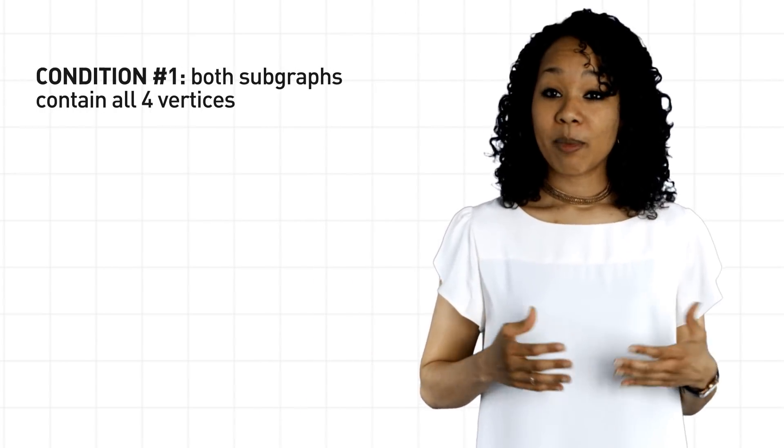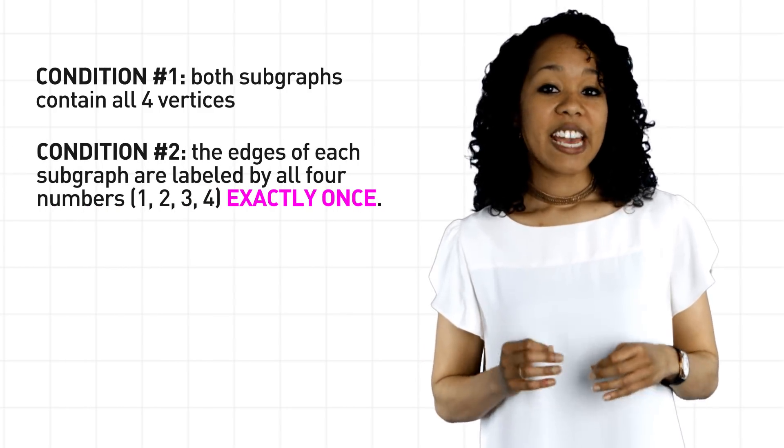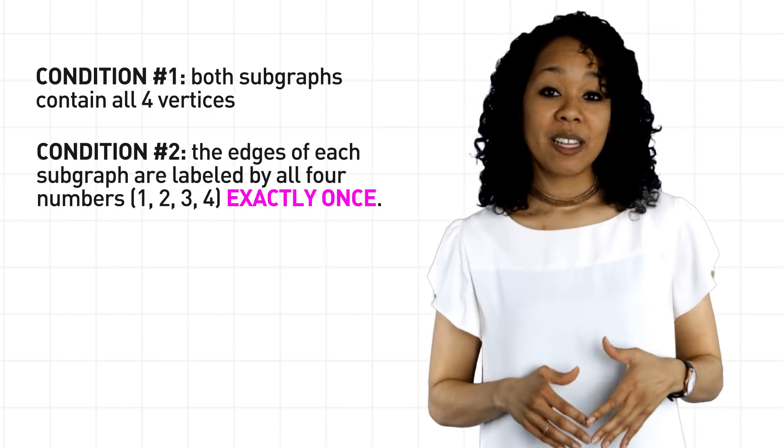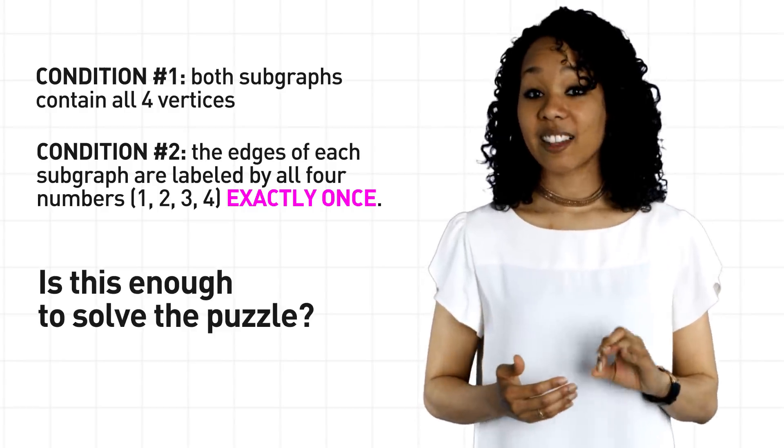Just to recap, to find a solution to the puzzle, we need two subgraphs, A and B, so that number one, both subgraphs contain all four vertices, and number two, the edges of each subgraph must be labeled by all four numbers, 1, 2, 3, and 4, exactly once.